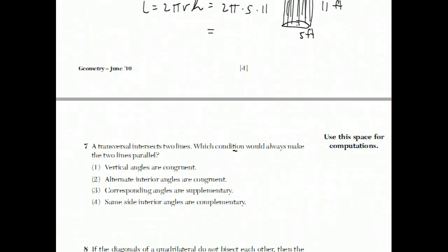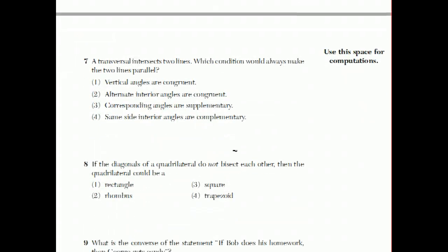Moving on to question number 7. A transversal intersects two lines, which condition would always make the two lines parallel? Well, when you have two lines, any two lines, a third line that hits both lines is called a transversal. Now, if the original two lines are parallel to each other, the transversal creates a lot of, it creates 8 angles: 1, 2, 3, 4, 5, 6, 7, 8. And all the obtuse angles are going to be congruent and all the acute angles are going to be congruent to each other. So it's basically like two different angles formed.